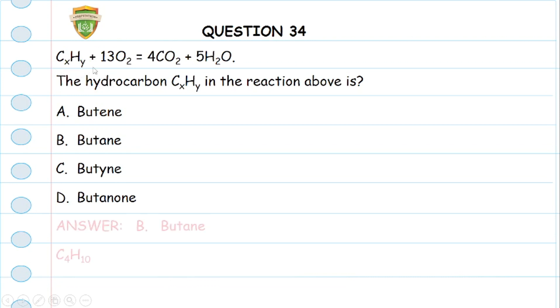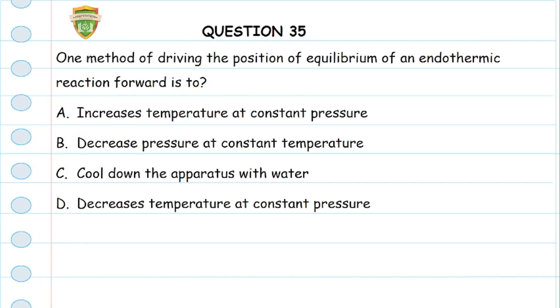Question 35 says: One method of driving the position of equilibrium of an endothermic reaction forward is to... The answer to this is by increasing temperature at constant pressure. An endothermic reaction is a reaction that takes in heat, as opposed to an exothermic one which releases heat. So the best way to drive the position of equilibrium forward is to increase the temperature of this endothermic reaction, which is option A.